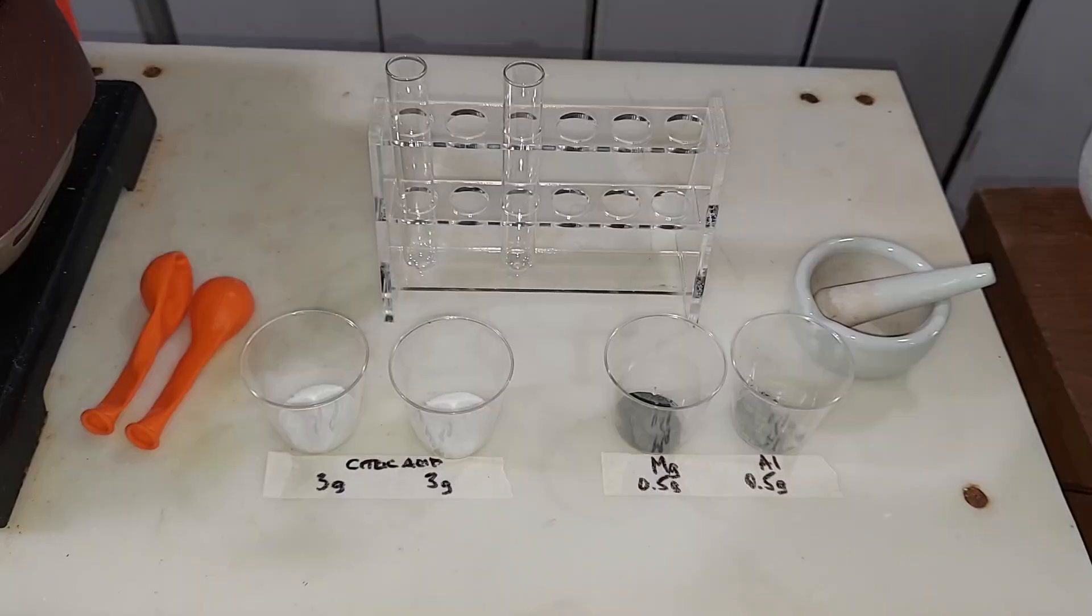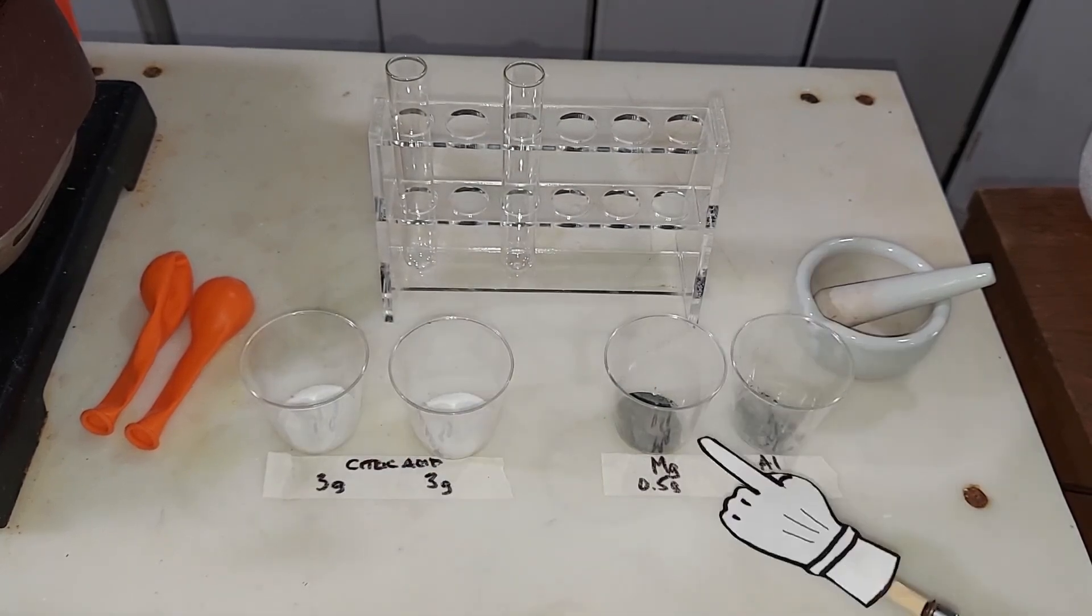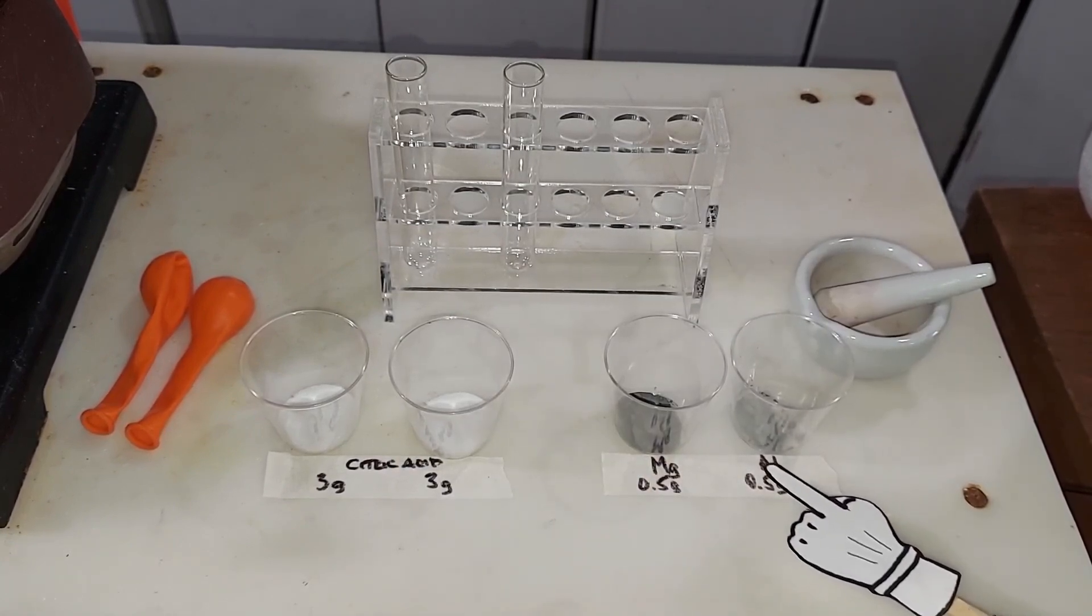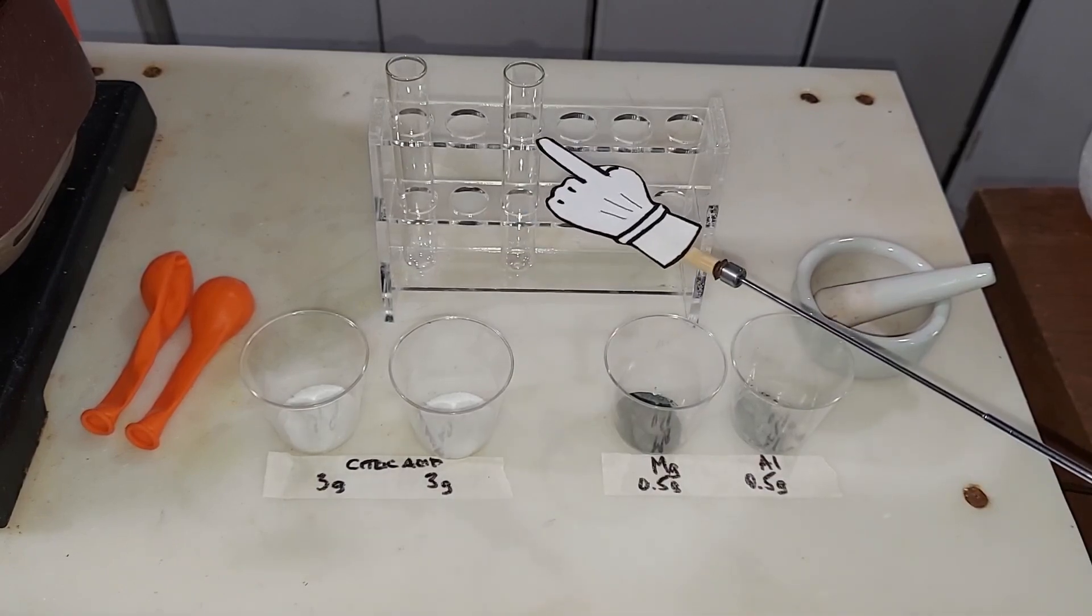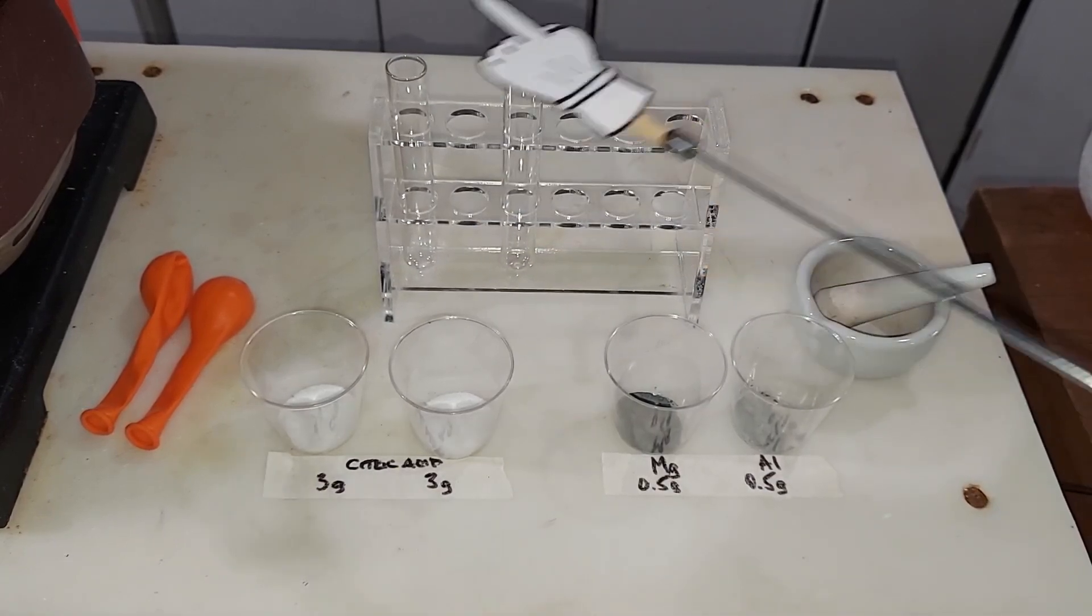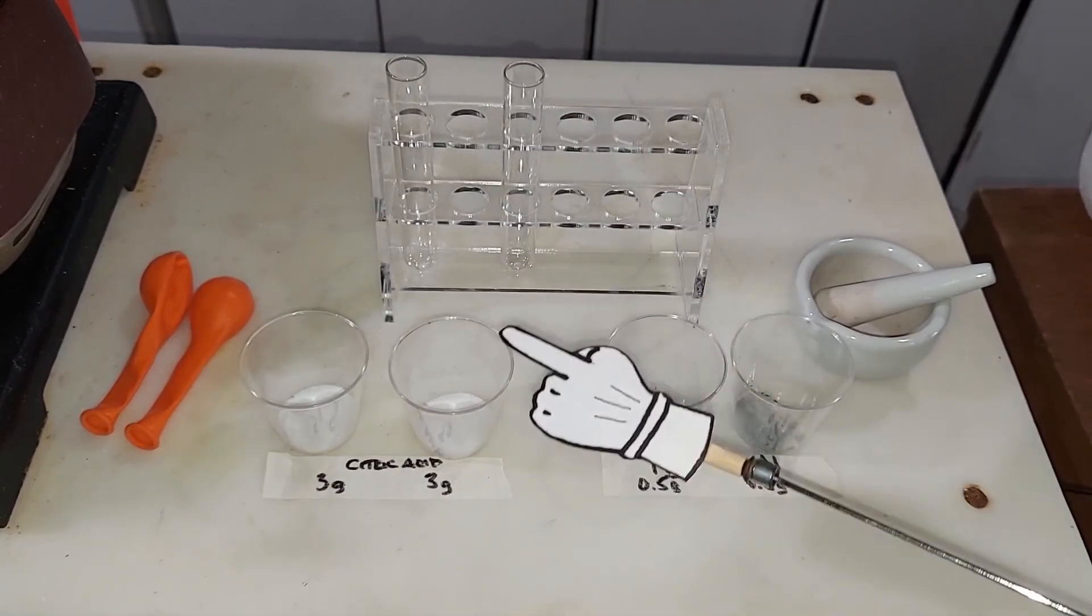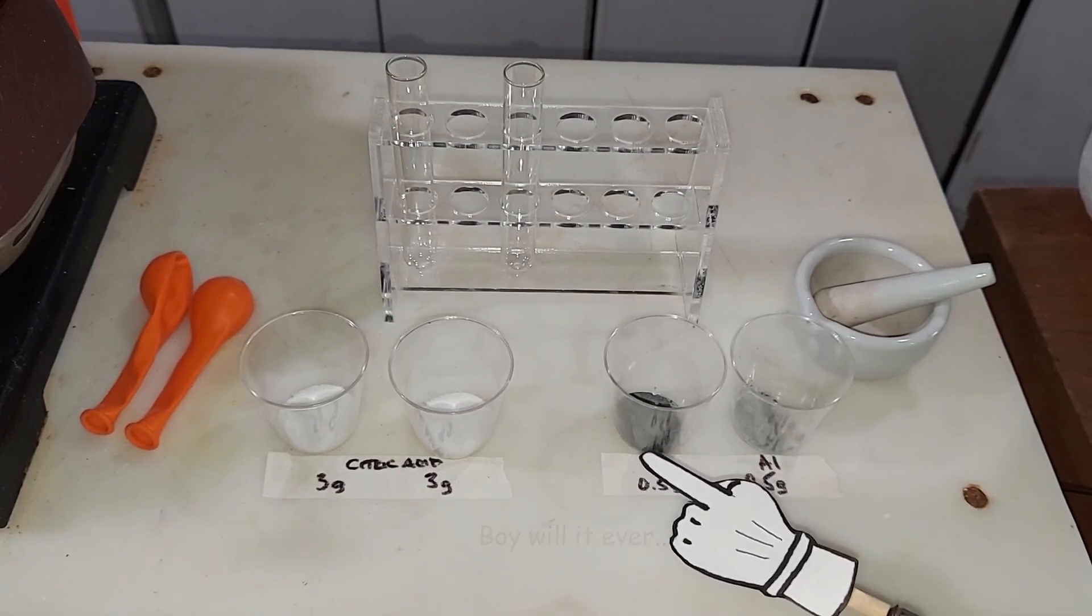Specifically for the hydrogen rocket project where I'm hoping to produce hydrogen in that small container and shoot the rocket off, I plan on using citric acid and magnesium or aluminum. I don't know which will produce more hydrogen. I've got three grams of citric acid mixed with half a gram of magnesium in one, and half a gram of aluminum in the other. Then I'll put them into test tubes with water, cover with balloons, and shake them.